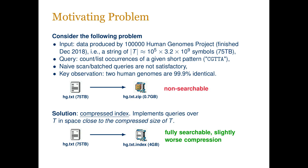The solution to this problem is a data structure called a compressed index. It allows performing queries over the original text T in space close to the compressed size of T. We can think of this as a searchable compression format. By adding the searching feature, the size of the compressed file grows slightly, but in many cases the resulting file is still orders of magnitude smaller than the original dataset.